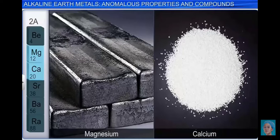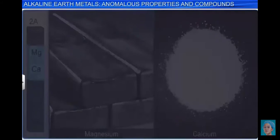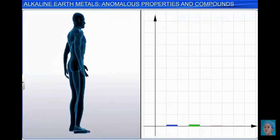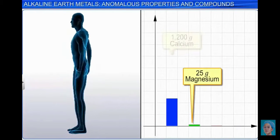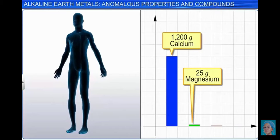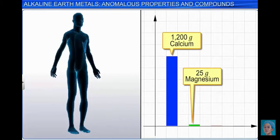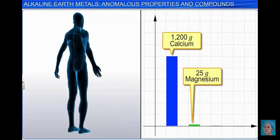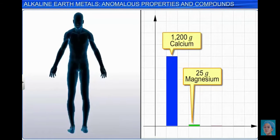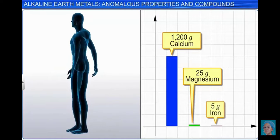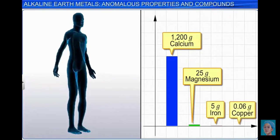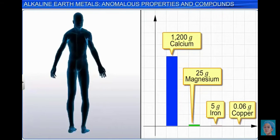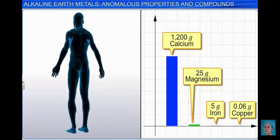An adult human body contains 25 grams of magnesium and 1200 grams of calcium. Compare this with only 5 grams of iron and 0.06 grams of copper. Let's go into these important functions in more detail.